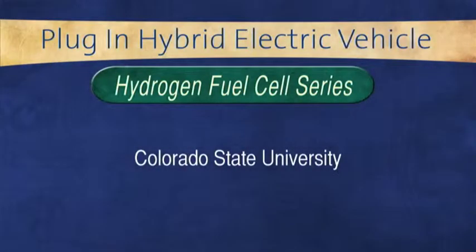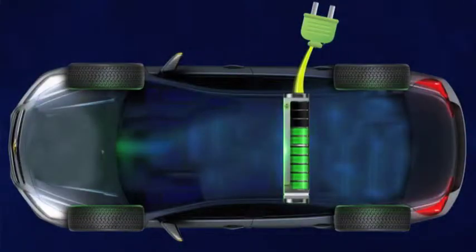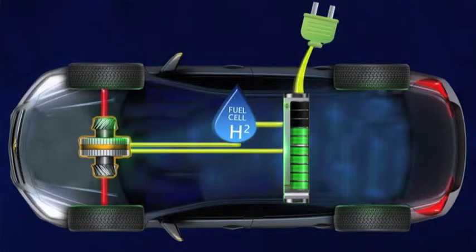In our fifth sub-architecture, we have a hydrogen fuel cell series hybrid electric vehicle. In this architecture, a fuel cell utilizes hydrogen to generate electricity. This electricity can be used to charge a battery or power an electric motor that can propel the vehicle.